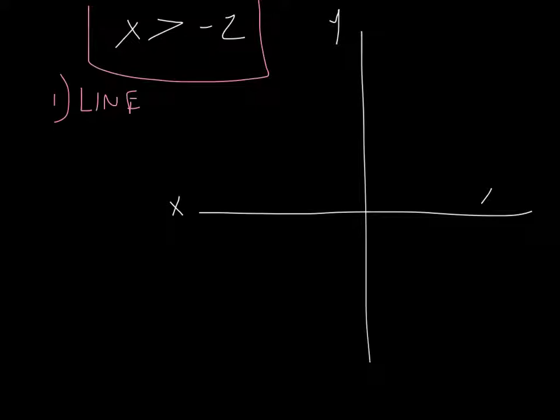So what you do is, this one's different because it's just x is greater than negative 2, there's no y there. That means it's going to probably be a straight line, side to side, or up and down. What you do is, you pretend like this isn't there. Pretend like it's just an equals sign. That's how you plot the line. x equals negative 2.